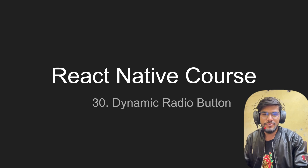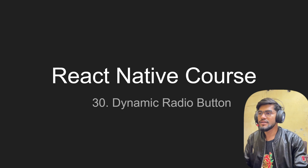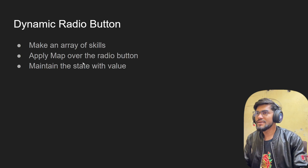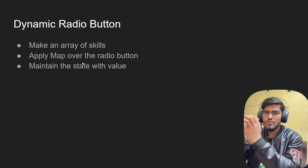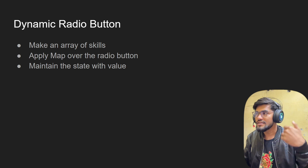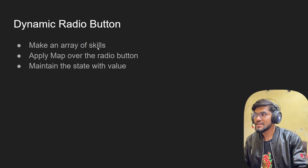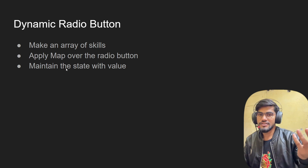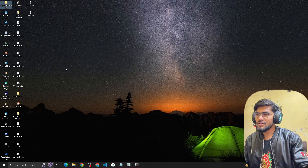Hey guys, welcome back to the React Native course. In this video we are going to talk about how to build a dynamic radio button in React Native. Dynamic means you're going to have one array and loop the array items to build the radio buttons dynamically. We're going to make an array of skills, map the radio buttons, and maintain the state. It's simple, so let's code.